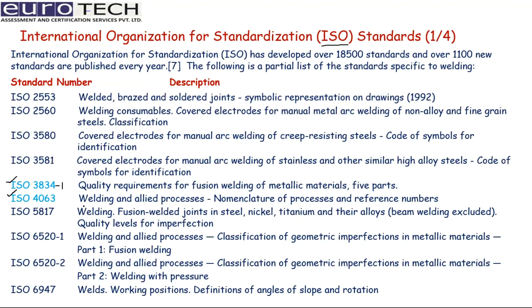ISO 4063 covers the combination of all welding processes, indicating welding and allied processes such as arc welding, pressure welding, gas welding, and so on. This list will also be attached in the description — you can download ISO 4063 to know the various processes listed under ISO.